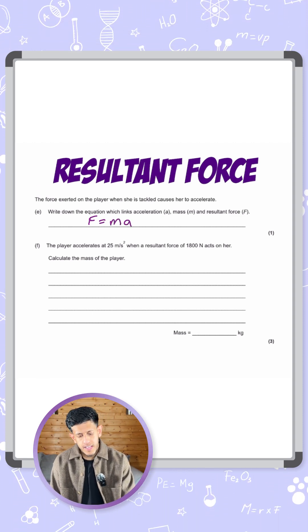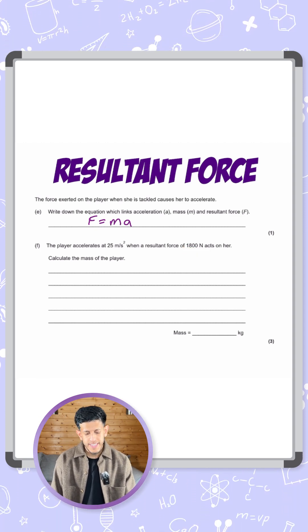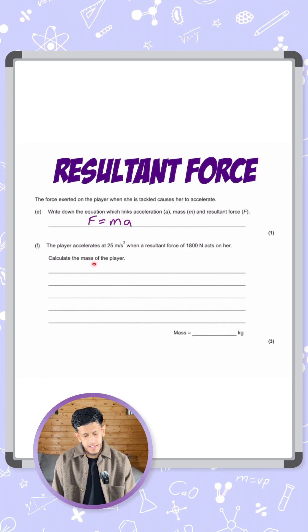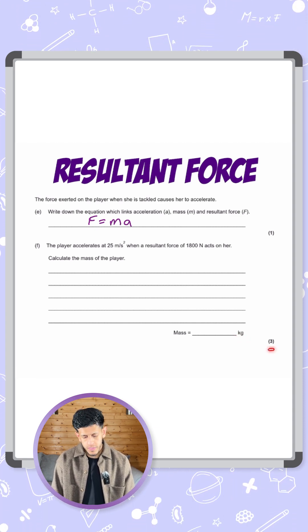Now it says the player accelerates at 25 meters per second squared when a resultant force of 1800 newtons acts on her. Calculate the mass of the player. They've given us the unit in kilograms and we know the question is worth three marks.